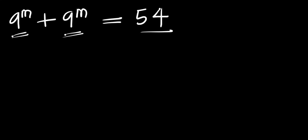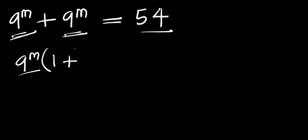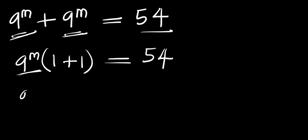Here we have 9 power m plus 9 power m. We can factor out 9 power m. If we divide 9 power m by 9 power m we have 1, plus we do the same thing here we have 1. So we now have 9 power m times 1 plus 1, which is 2.